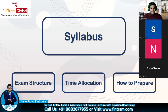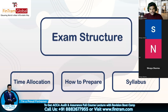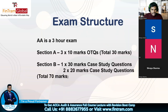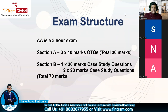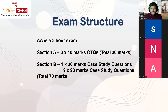Moving on to the exam structure. Like every other skill-level paper, it is a three-hour exam. In Section A, we have three OTQs — objective test questions — each consisting of a small scenario with five MCQs, giving 10 marks per OTQ. So three OTQs in Section A gives a total of 30 marks.